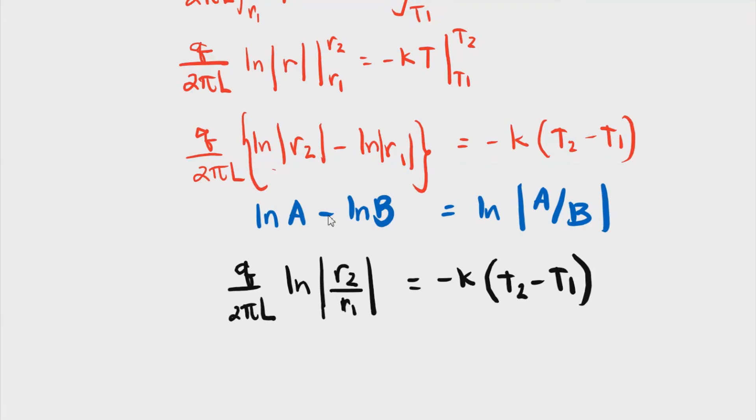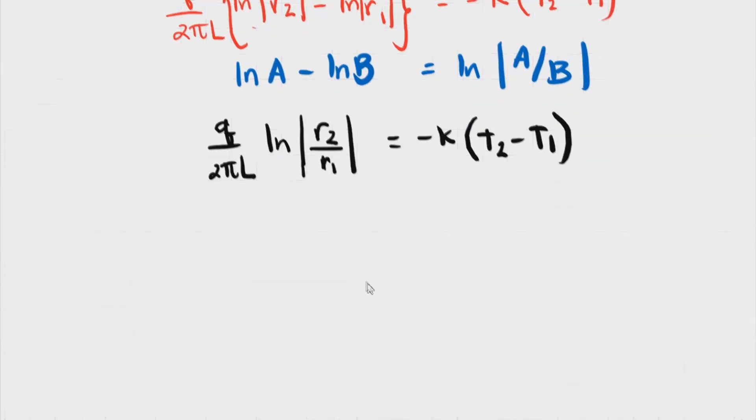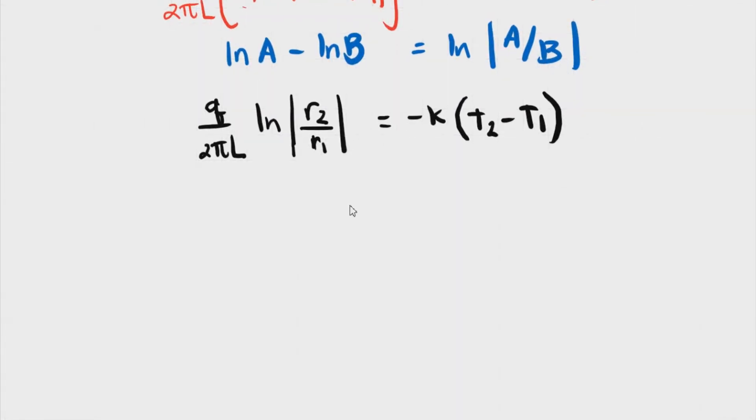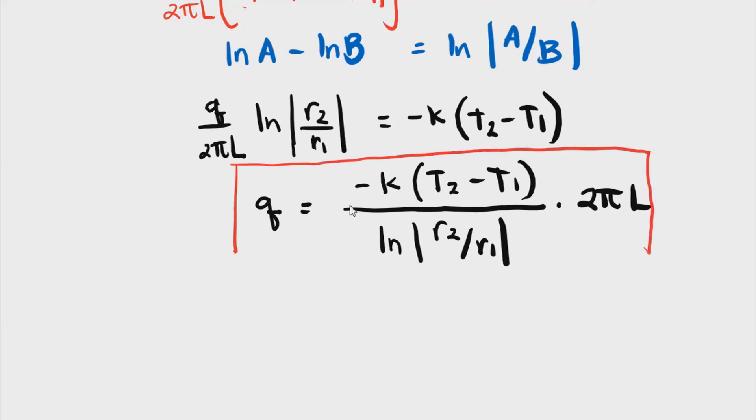And if you want to further distribute this negative, we have t1 minus t2. But we won't do that. So with that, if this is our form, our heat rate is equal to negative k, and then t sub 2 minus t sub 1, divided by ln of r sub 2 over r sub 1, and then multiplied with our 2πL. Okay? This is the final equation for our heat rate in a hollow cylinder. Easy, we just integrated it.